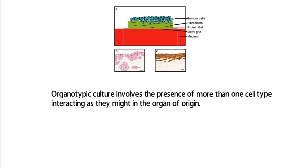For example, the top figure shows that the fibroblasts and the tumor cells interact with each other to form a structure of an organ on the metal grid.